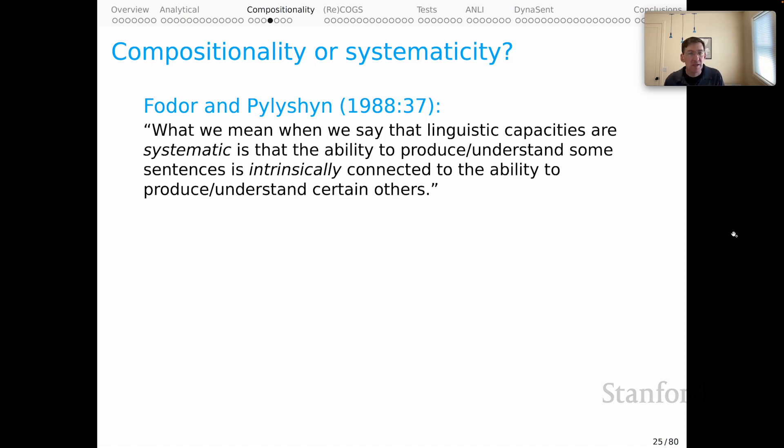what we mean when we say that linguistic capacities are systematic is that the ability to produce or understand some sentences is intrinsically connected to the ability to produce or understand certain other ones. So the idea is that if you understand the sentence, Sandy loves the puppy, then just by that very fact, you also understand the puppy loves Sandy.